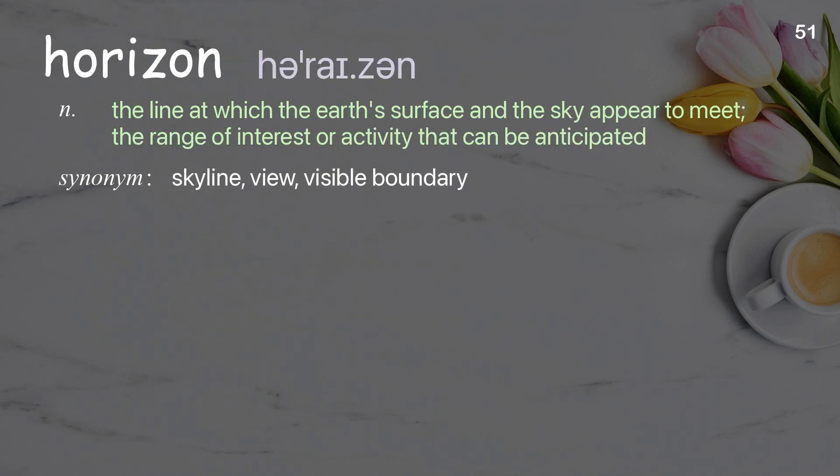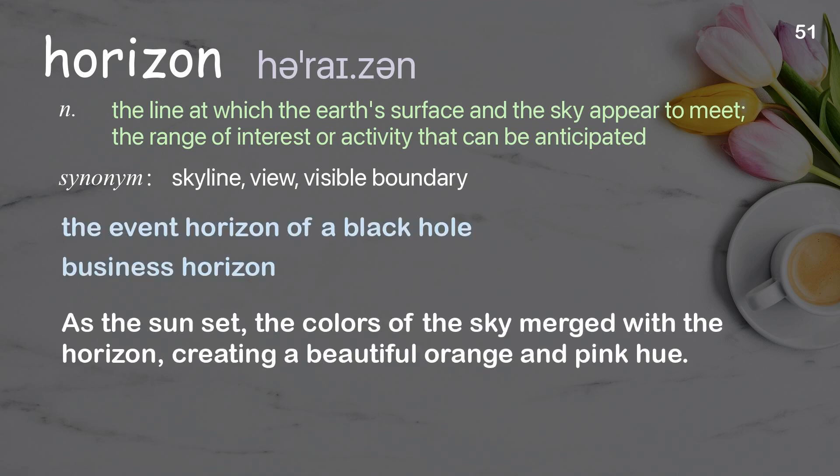Horizon: the line at which the Earth's surface and the sky appear to meet; the range of interest or activity that can be anticipated. Examples: the event horizon of a black hole; business horizon. As the sun set, the colors of the sky merged with the horizon, creating a beautiful orange and pink hue.